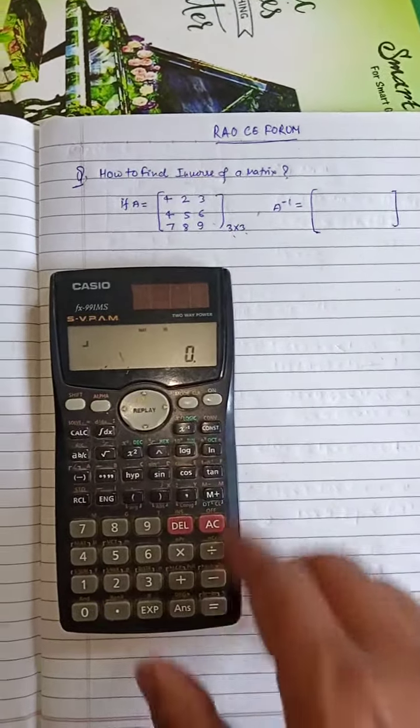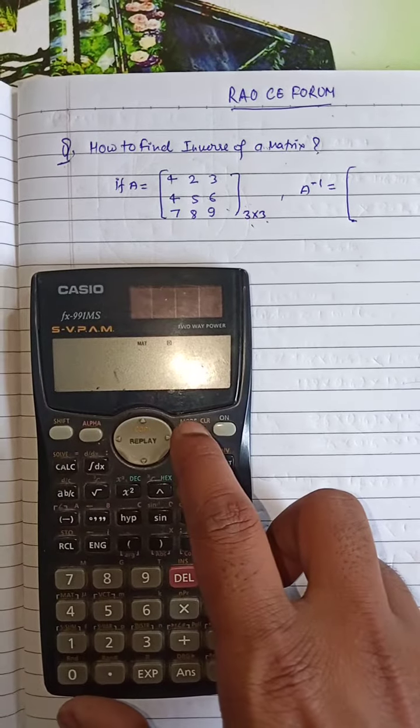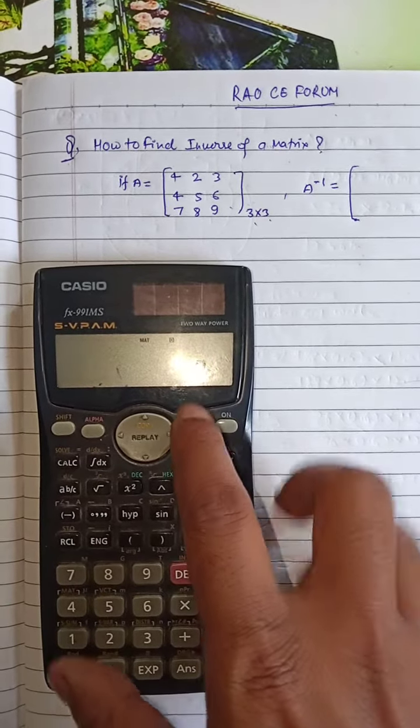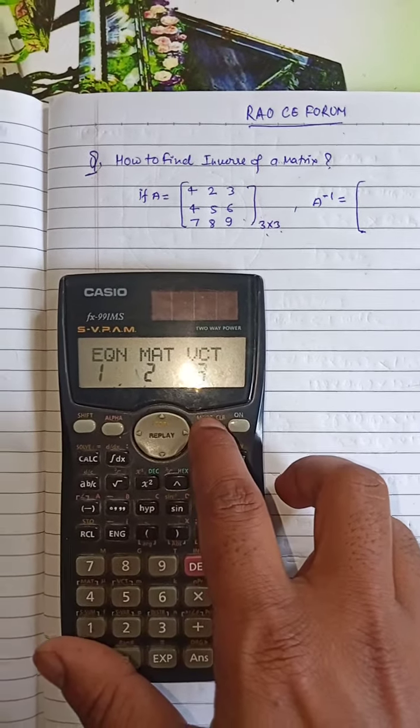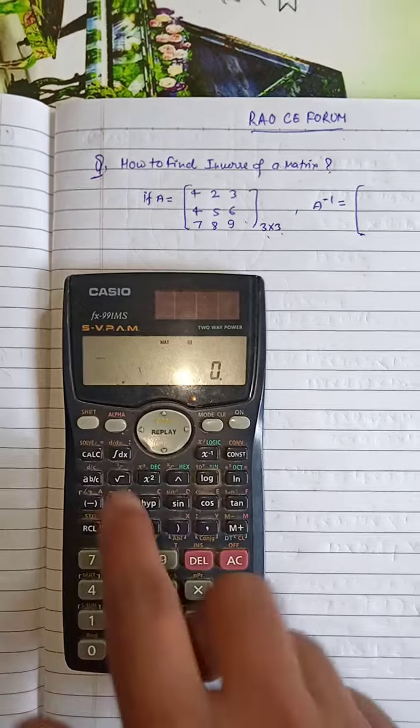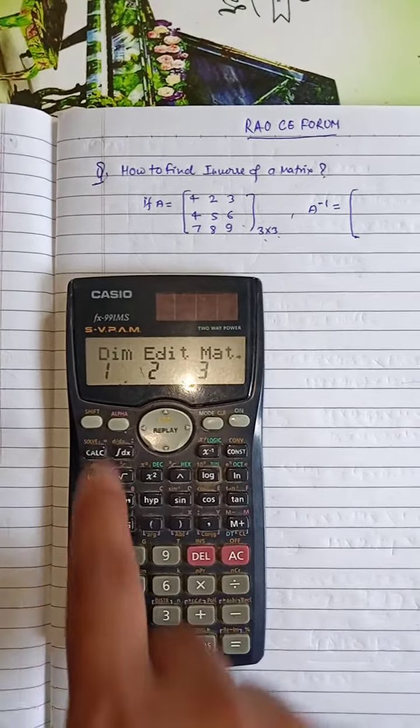First, press MODE to set up matrix. This is MAT. Press 2, then SHIFT 4 to set the parameters.